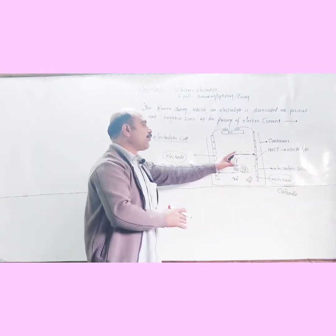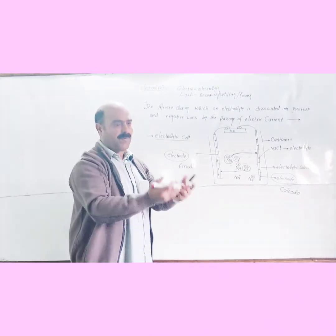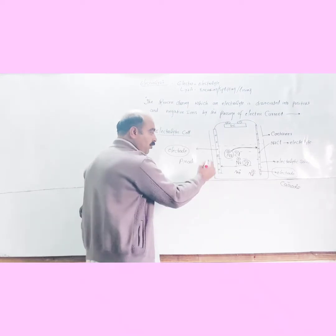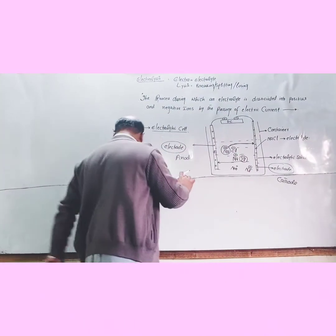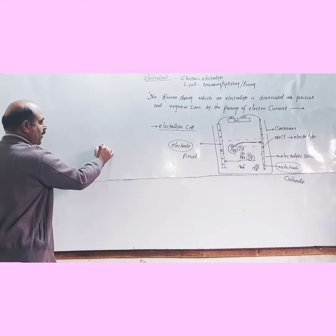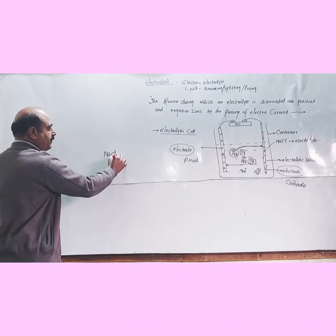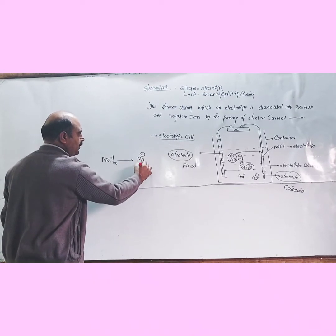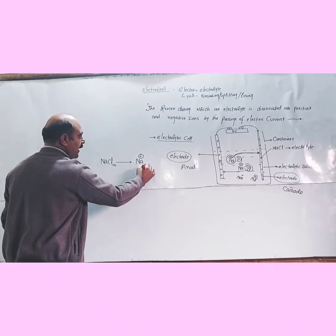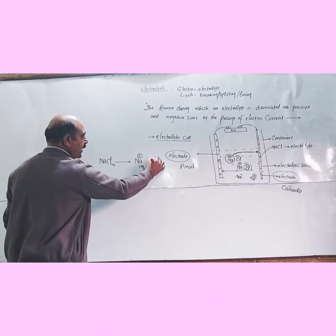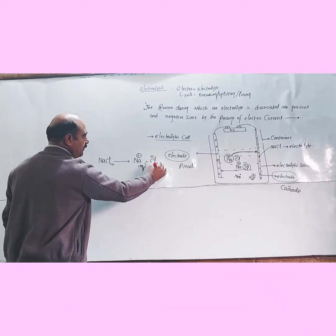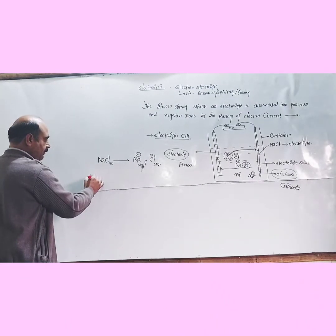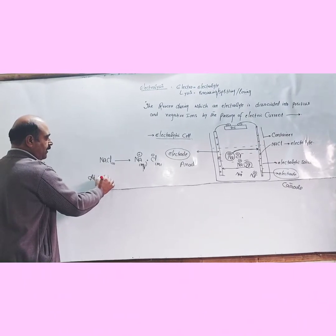Reactions occur at both electrodes — at the cathode and at the anode. The first step is the ionization reaction. Sodium chloride in solid form is ionized in water into sodium ions (Na⁺) and chloride ions (Cl⁻). This is the reaction at the anode.